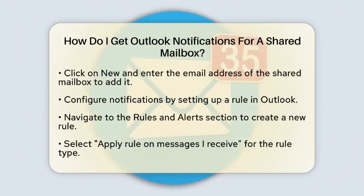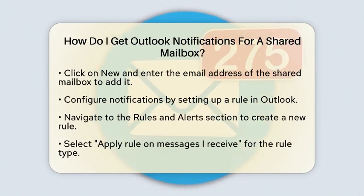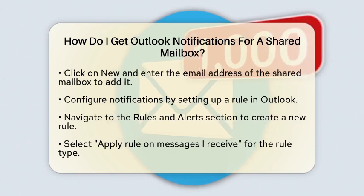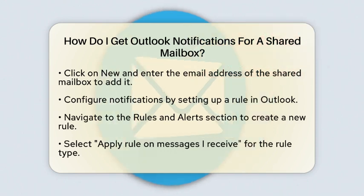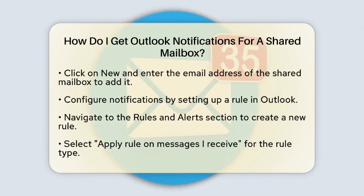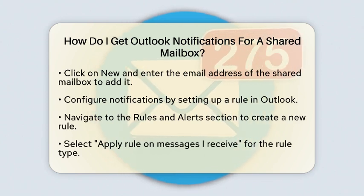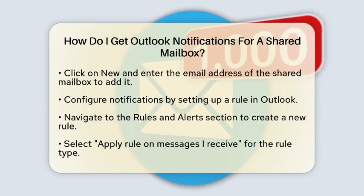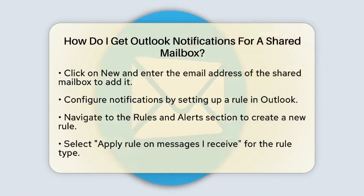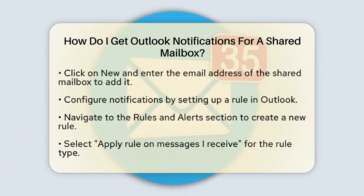You can do this by setting up a rule in Outlook. Navigate to the Rules and Alerts section. Create a new rule and select Apply rule on messages I receive. Choose the shared mailbox as the recipient. For the action, select Display a desktop alert. This will ensure you receive a notification whenever an email arrives in that shared mailbox.